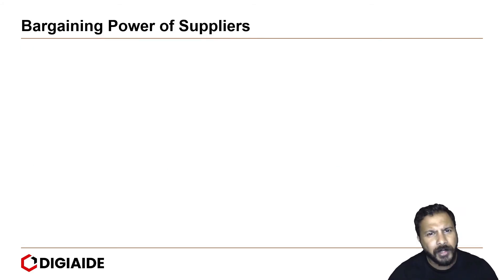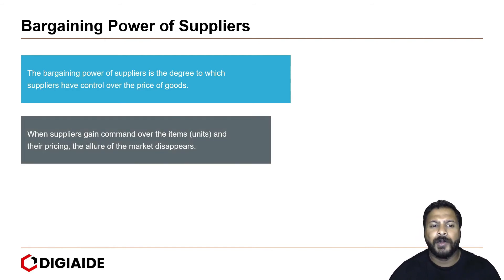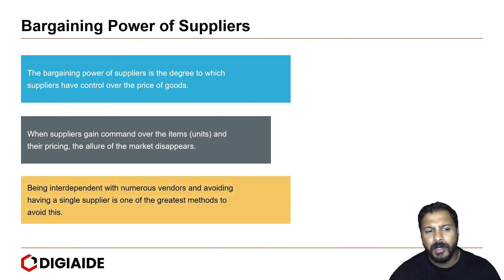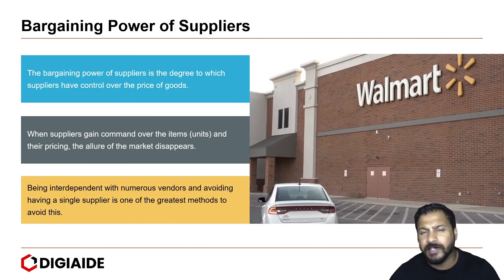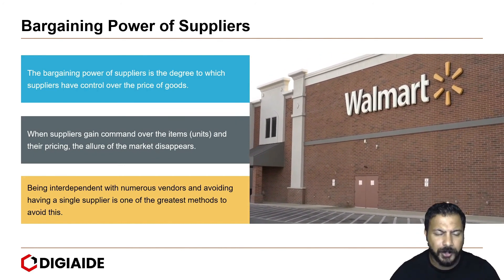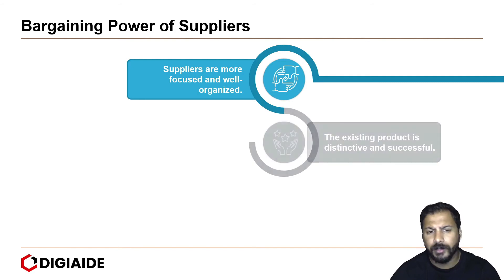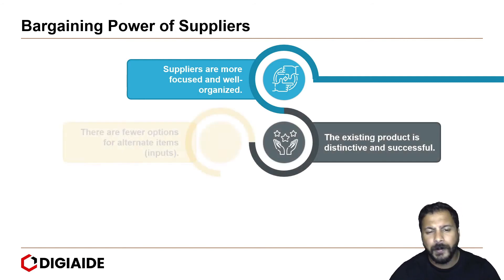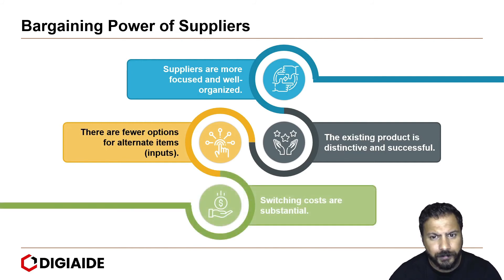Moving on to the Bargaining Power of Suppliers. This is the degree to which suppliers have control over the price of goods. When suppliers gain command over items and their pricing, the allure of the market disappears. Being interdependent with numerous vendors and avoiding a single supplier is one of the best methods to avoid this. Walmart is one of the leading suppliers with greater bargaining power. Bargaining power is high when suppliers are more focused and well organized, the existing product is distinct and successful, there are fewer alternative items in the market, and switching costs are substantial.